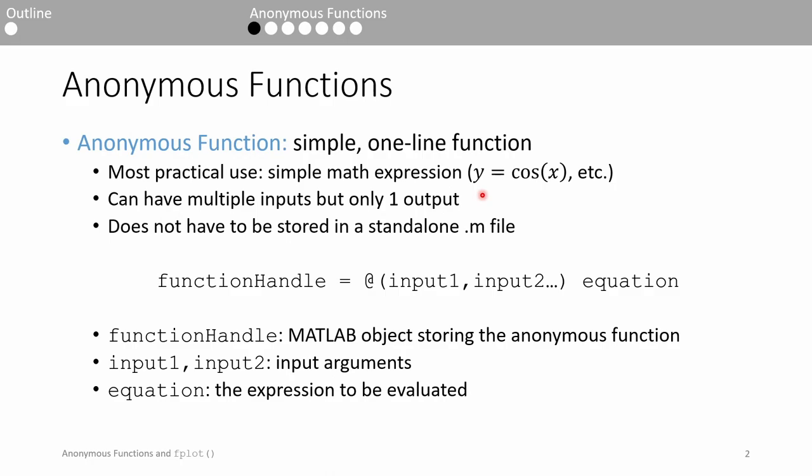The syntax of an anonymous function is as follows. First, you define the function handle. A function handle is basically the variable storing the anonymous function. After the equal sign, you type the at symbol, which is the signature characteristic of an anonymous function. The at symbol is followed by the list of input arguments your anonymous function accepts in parentheses.